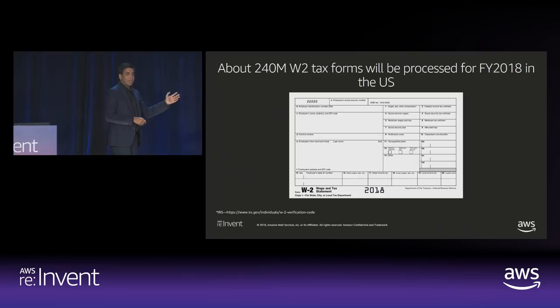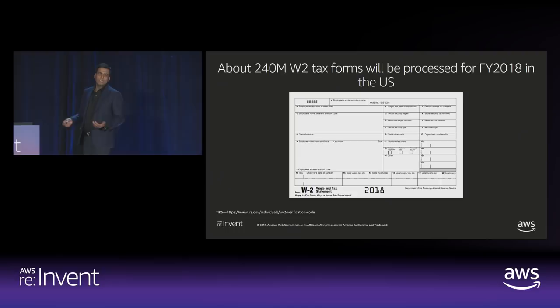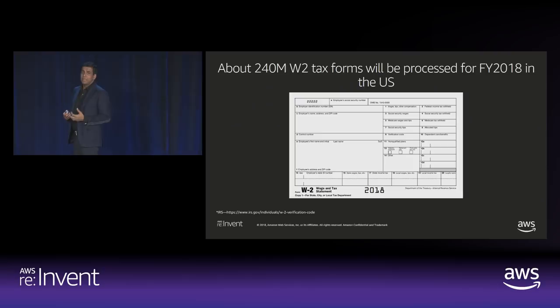Let's look at the next document — hopefully you know this one better. By the way, if you haven't filed your 2017 taxes, it's already late. This is your W-2 form, what you file with your tax return. The estimate for 2018 is that about 240 million W-2s are processed in the US alone — a very important document with information that really impacts your life and business.